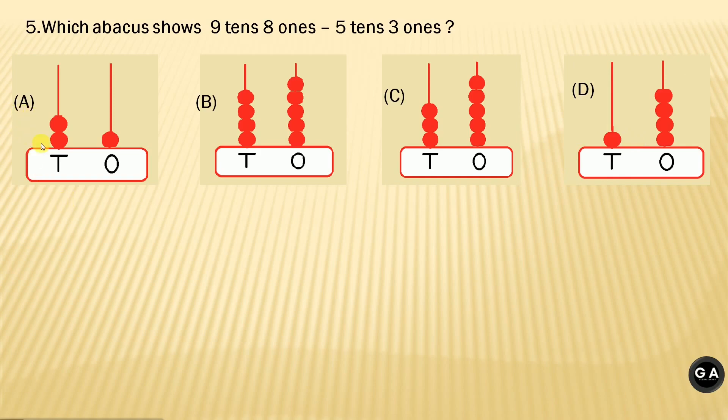First, option A: 2 tens means 20 and 1 one means 1, equals 20 plus 1 equals 21. Option B: 4 tens means 40 and 5 ones means 5, equals 40 plus 5 equals 45. Option C: 3 tens means 30 and 5 ones means 5, equals 30 plus 5 equals 35. Option D: 1 ten means 10 and 4 ones means 4, equals 10 plus 4 equals 14.